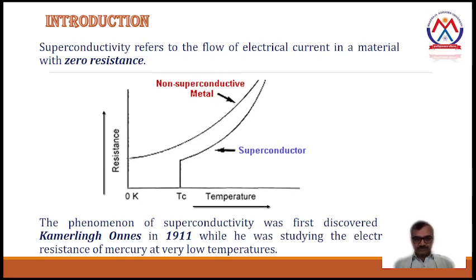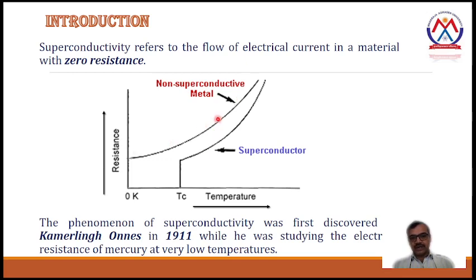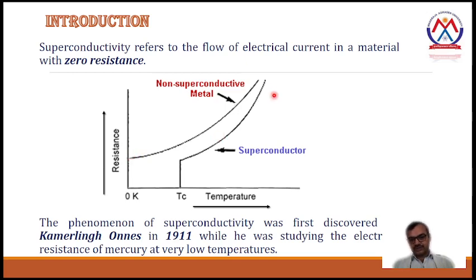To make it clear, let's see this diagram. This is a graph between resistance and temperature, with temperature increasing from left to right. It shows the resistance-temperature behavior of a normal non-superconductive metal and a superconductive material. In the non-superconductive metal, as the temperature decreases, the resistance also decreases gradually. As soon as the temperature reaches zero Kelvin, the resistance has some residual value.